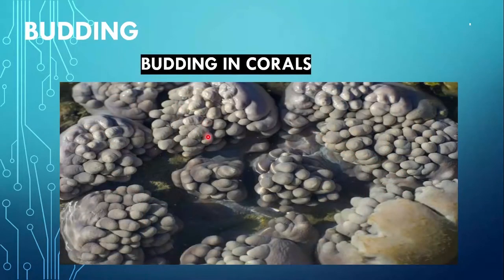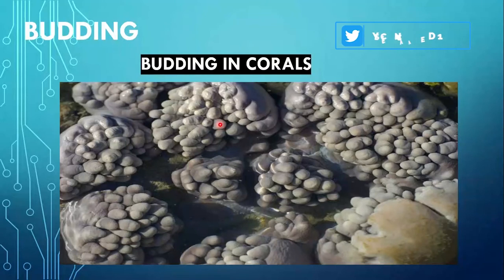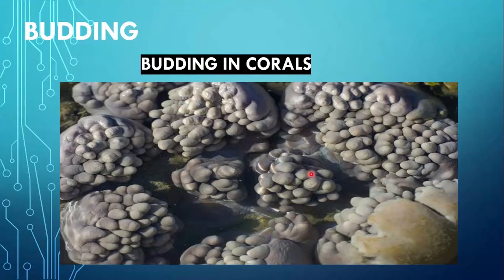Next is budding in corals. In the parent bodies of corals, small buds appear in the same way. But these buds do not detach from the parent body; rather they remain attached to the parent body and keep growing and dividing. In this way, corals form colonies. We will meet in the next lecture with the next topic, in which we will discuss the next type of asexual reproduction, that is spore formation.